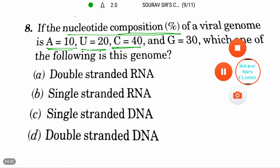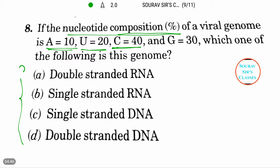So now here, these are the following genomes. The question we have asked is which one of the following genomes has this percentage composition: adenine 10, uracil 20, cytosine 40, and guanine 30?